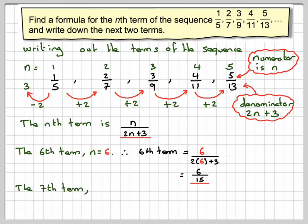And the 7th term, n is going to be 7, therefore the 7th term is going to be 7 over 2 times 7 plus 3, which is going to be 7 over 17.